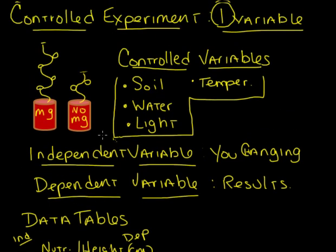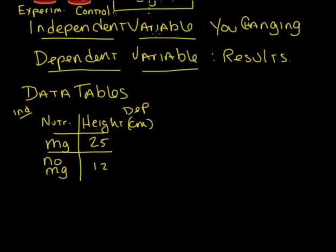Back to this before I forget. This side received the independent variable. So it is called the experimental group. This side received only the controlled variables. So we call it the control. It's a pretty important part. Surprised I overlooked it.